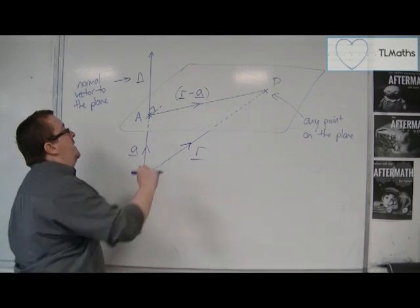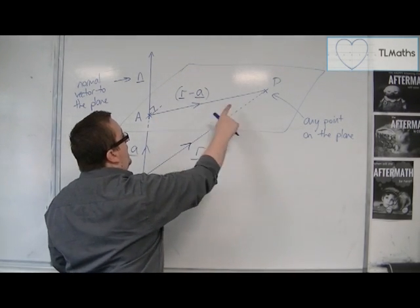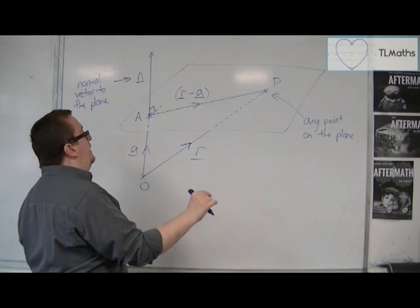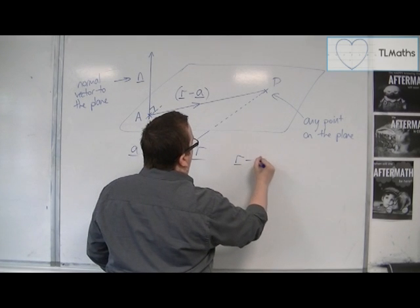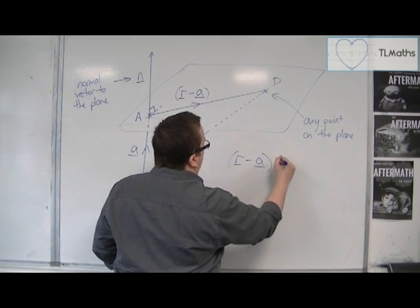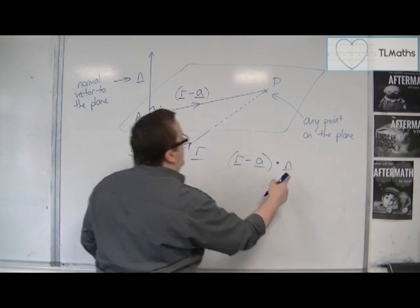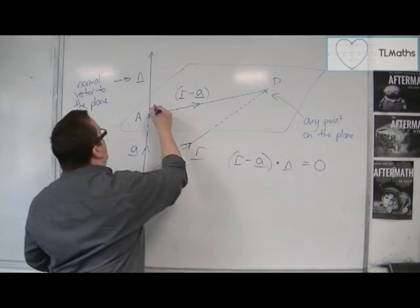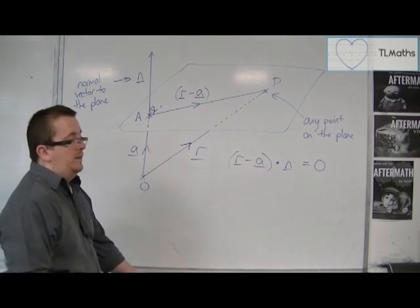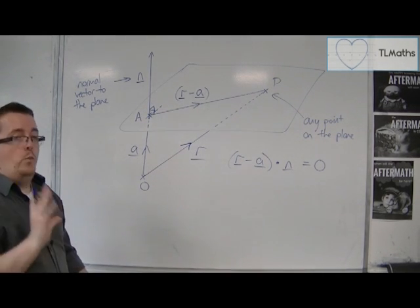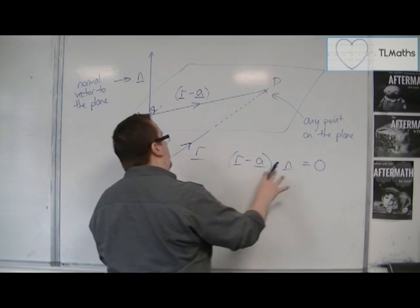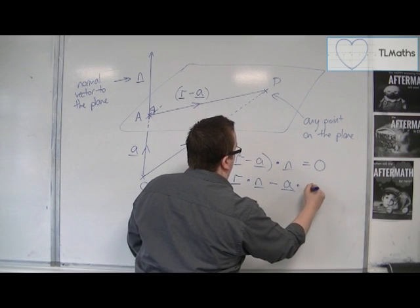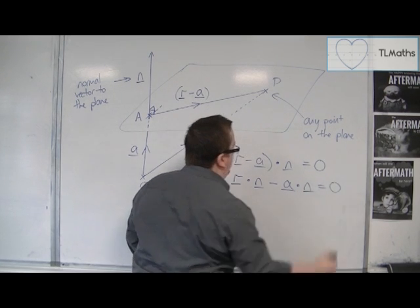And what I know is that because R minus A is parallel to the plane, because it's running along the plane, that means that R minus A dotted with the normal vector, that must be 0. They must be at right angles to one another. Now what you can do there is then expand the brackets out.